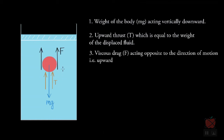The third force acting on the body is the viscous drag, which acts opposite to the direction of motion. As the body falls downward, the viscous drag acts upward. So we have three forces: weight mg acting downward, and upward thrust and viscous drag both acting upward. Initially when the body is dropped from rest, it will accelerate because mg dominates all other forces.